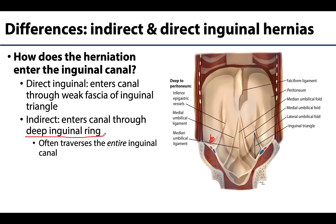A direct inguinal herniation does not go through an already existing entryway — it is more direct, pushing its way into the inguinal canal through an area of weak fascia in the inguinal triangle. The inguinal triangle is bounded by the inferior epigastric vasculature superolaterally, the inguinal ligament inferiorly, and the rectus abdominis muscle medially. This is sometimes referred to as the triangle of Hesselbach.